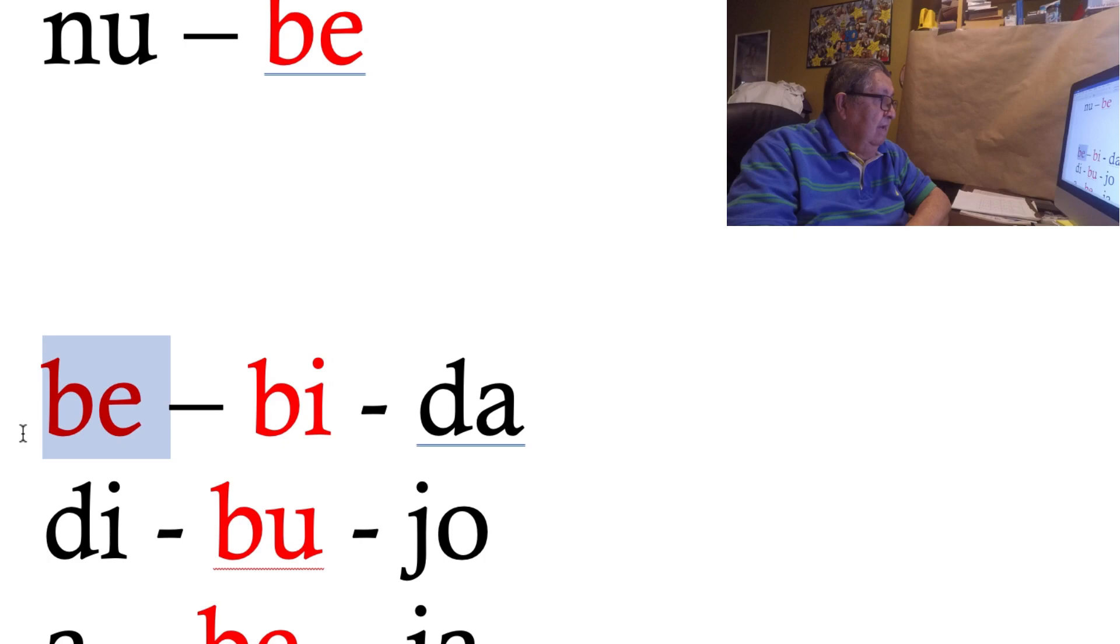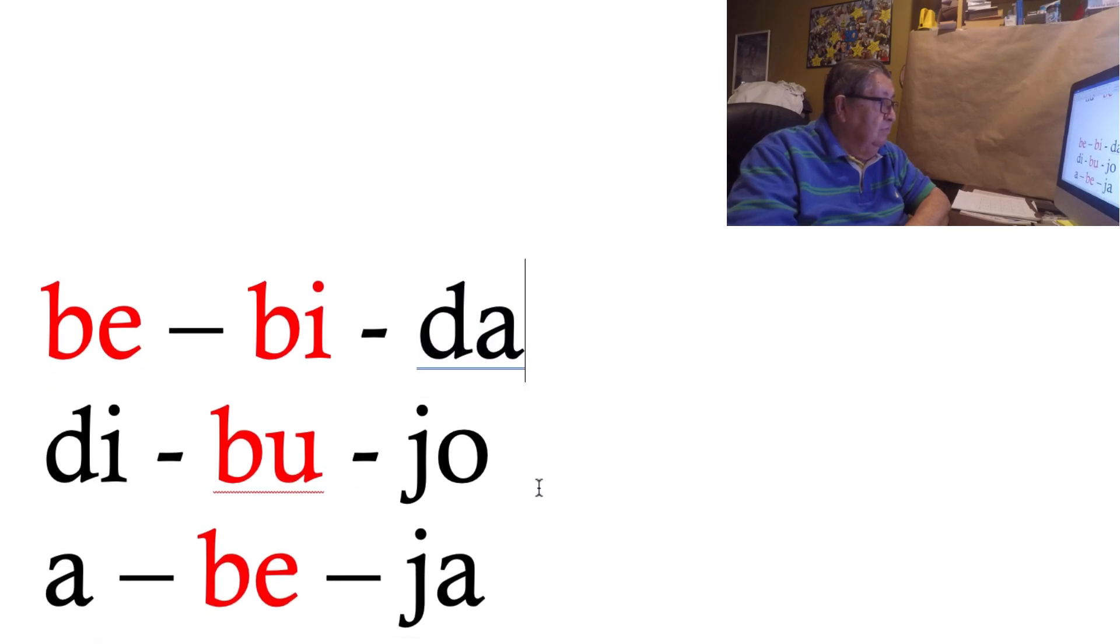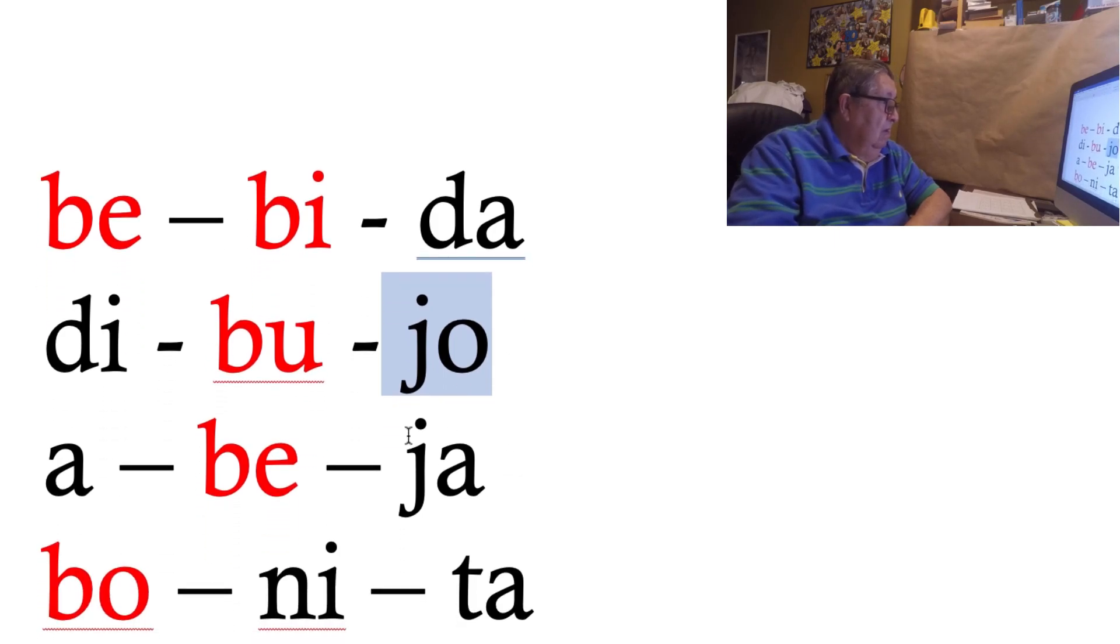La B con la E es be, la B con la I es bi, la D con la A es da. Junto es bebida. La D con la I es di, la B con la U es bu, la J con la O es jo. Dibujo.